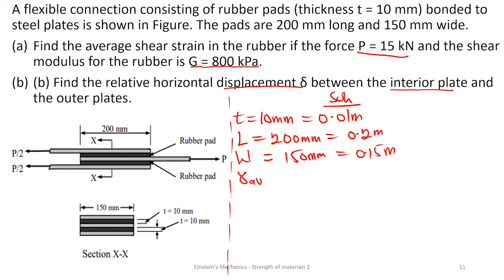We are interested in finding the shear strain, which is unknown. We have the force P given as 150 kilonewtons and the shear modulus G of the rubber as 800 kilopascals.